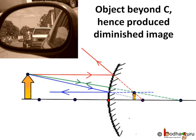The convex mirror used as rear view mirror in cars forms a diminished image. Hence, it may appear further than its real position. That is why there is a caution written on the rear view mirror: the object on the mirror is closer than it appears.